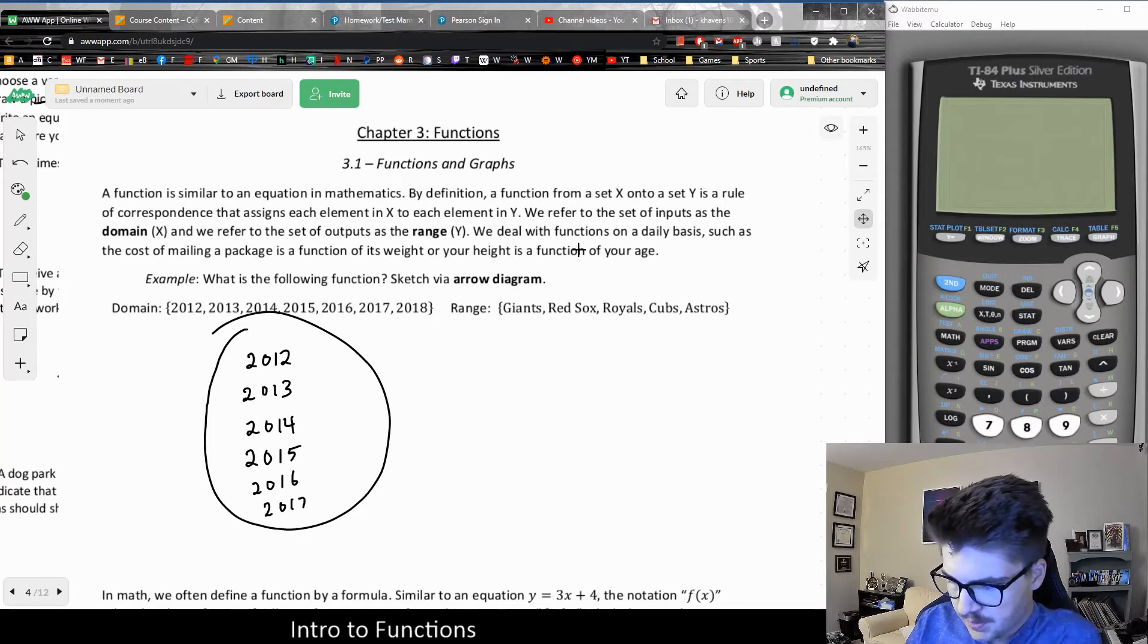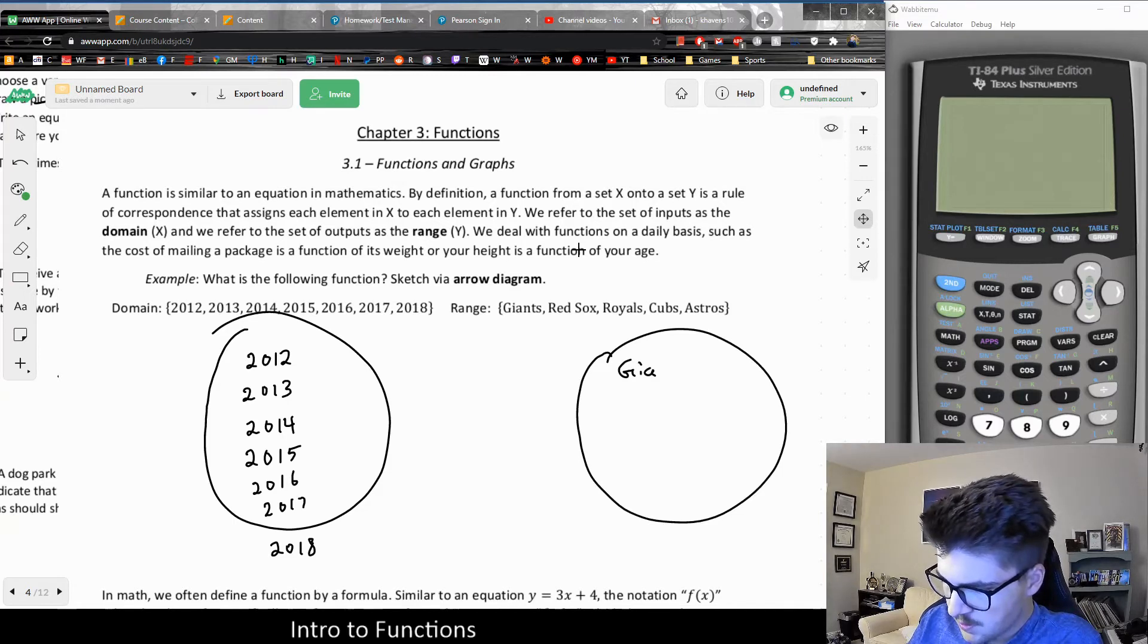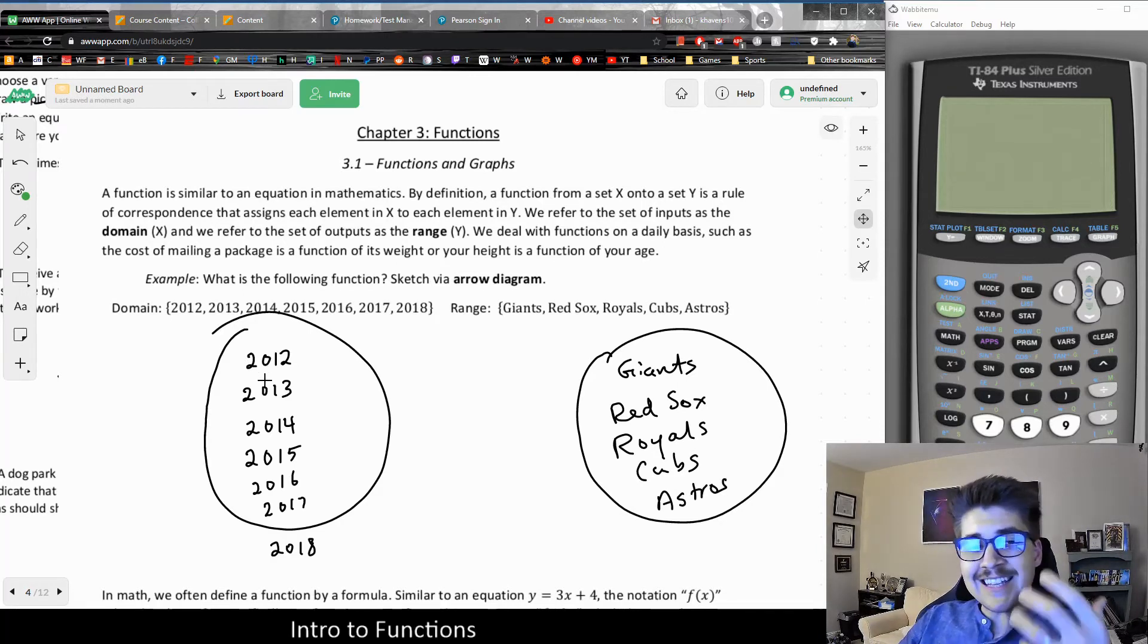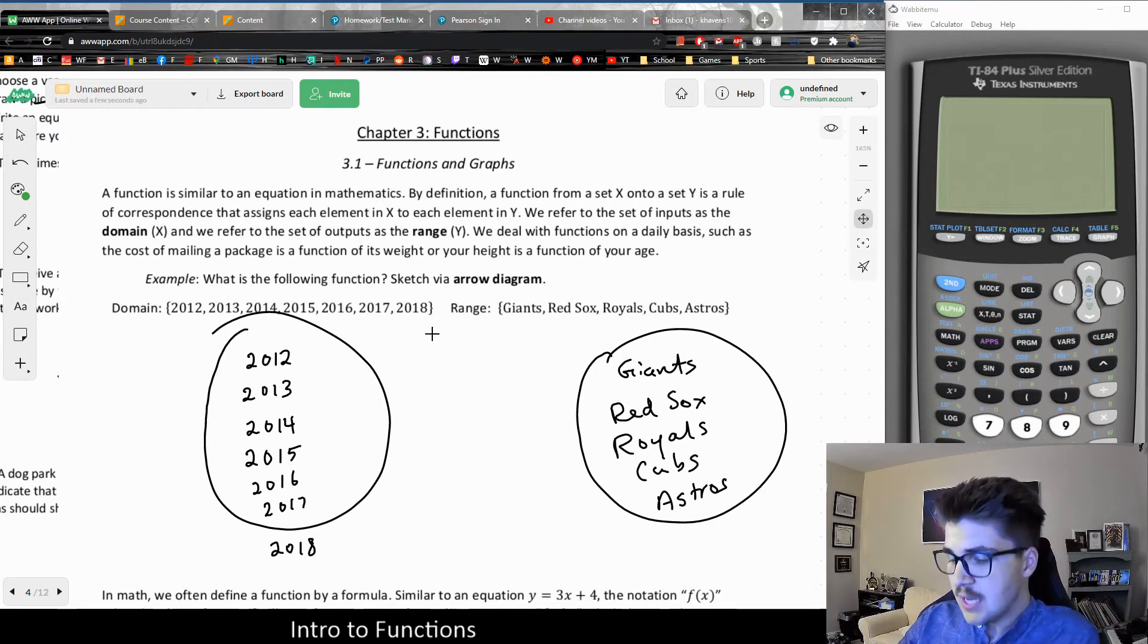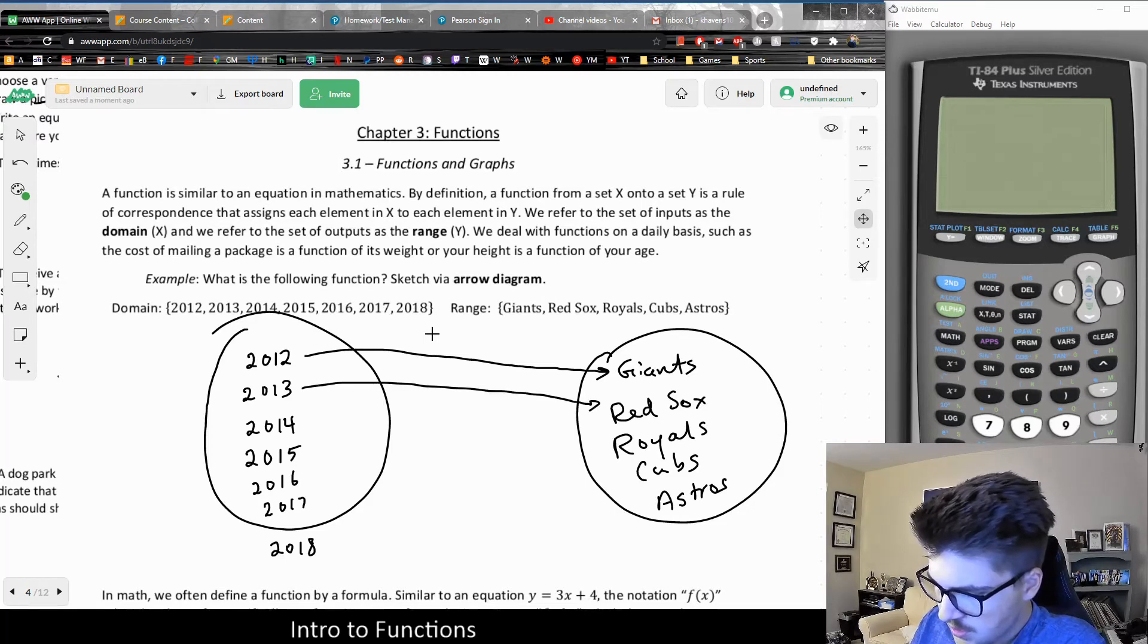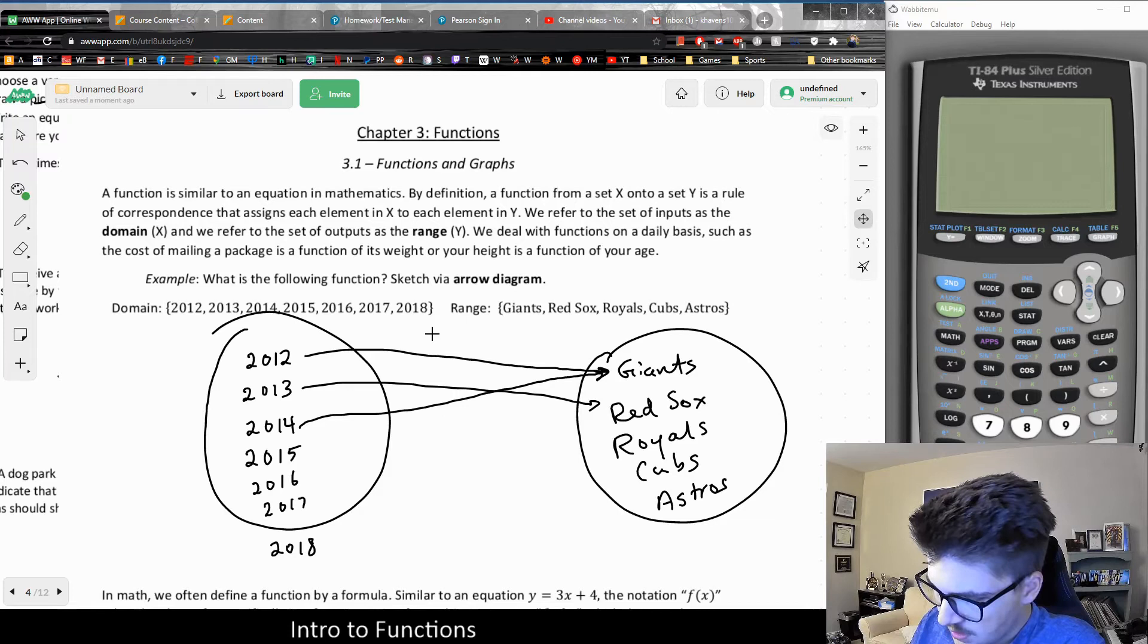And the range is the set of baseball teams. We would draw an arrow which would illustrate the correspondence from each element of the domain to each element of the range. This is something you probably don't know, and I hope I remember this correctly, but in 2012, the Giants won the World Series. In 2013, the Red Sox. 2014, the Giants won once again. 2015, the Royals won. 2016, the Giants won again, I think.